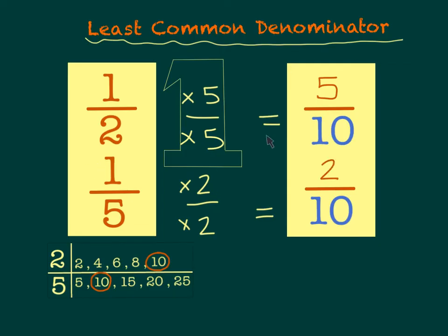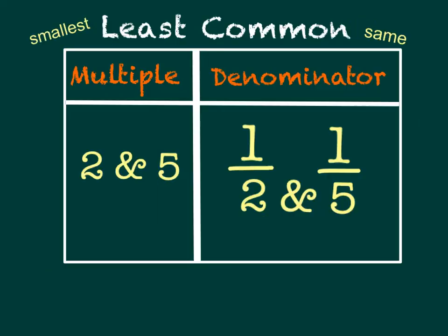I now have my two new fractions. You may have noticed that the least common multiple of 2 and 5 could be found by multiplying 2 times 5. The nice thing about multiples is that you're always going to find one, because you can always multiply the two numbers together — it just might not be the least common multiple.